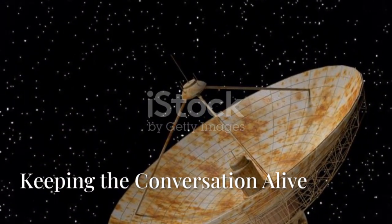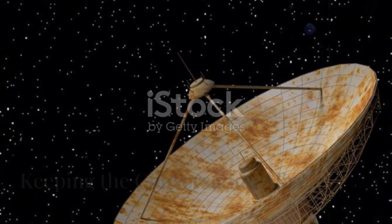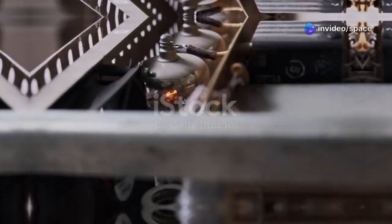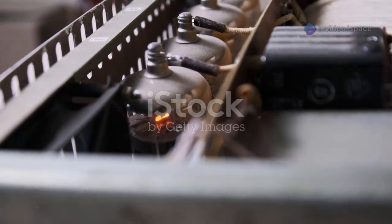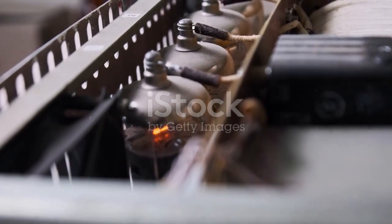Communicating with Voyager 2, over 13 billion miles away, is an extraordinary challenge. Its transmitter is as weak as a refrigerator light bulb. By the time its signal reaches Earth, it's billions of times weaker than a watch battery.